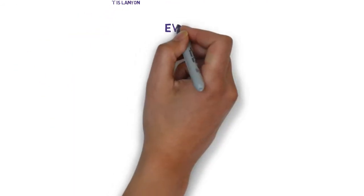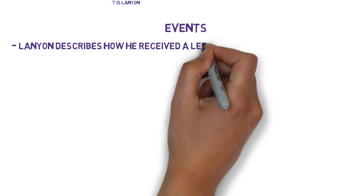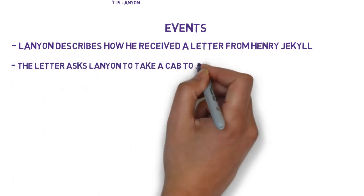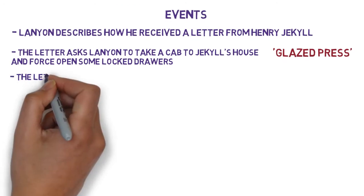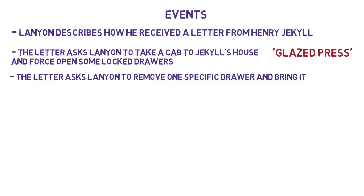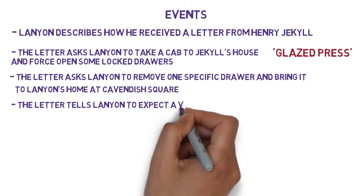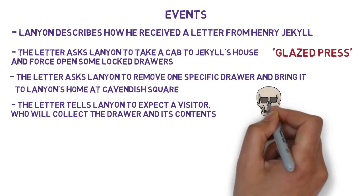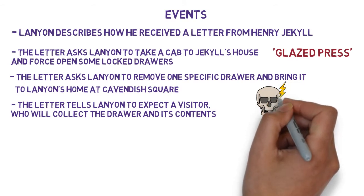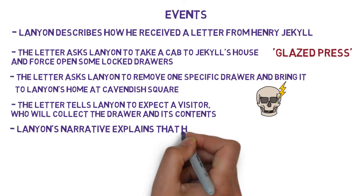The chapter starts with Lanyon's voice, so he describes how he received a letter from Henry Jekyll, and he includes the contents of the letter. The letter asks Lanyon to take a cab to Jekyll's house and force open some locked drawers — the phrase actually used is 'a glazed press', which these days we'd probably refer to as a cabinet or chest of drawers, with glass windows in part of it. The letter asks Lanyon to remove one specific drawer and bring it, and all of its contents, to Lanyon's home at Cavendish Square. Jekyll's letter tells Lanyon to expect a visitor who will collect the drawer and its contents, and also warns that if Lanyon doesn't do this, he may cause Jekyll's death, or perhaps damage to Jekyll's mental health.